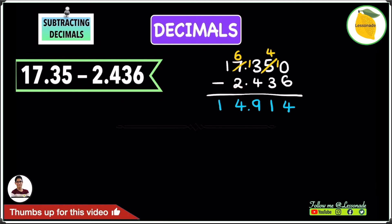13 minus 4 will be 9, and then 6 minus 2 will be 4. So this means our answer to this question is 14.914.